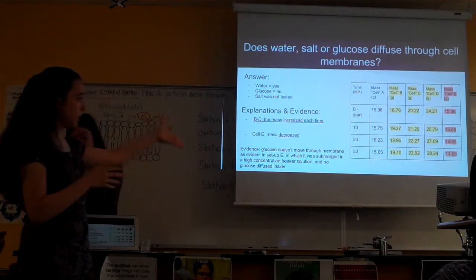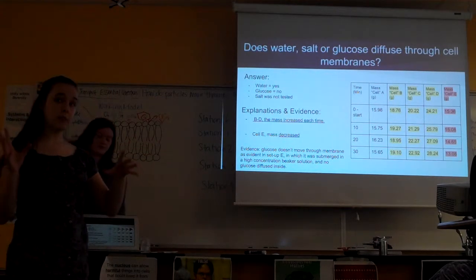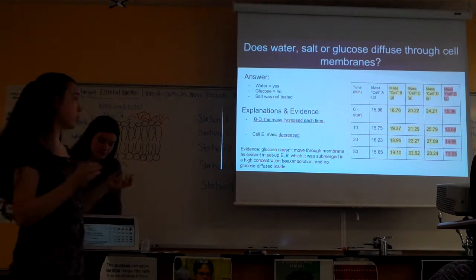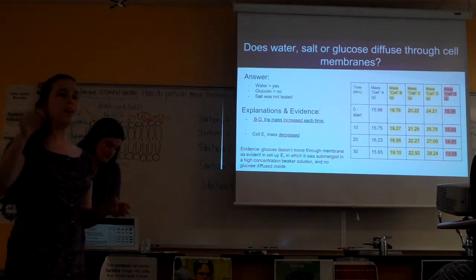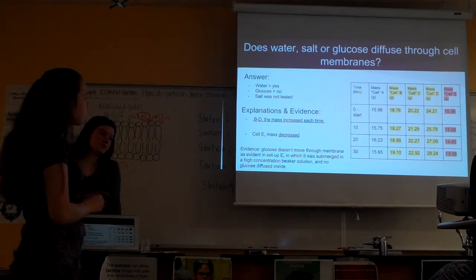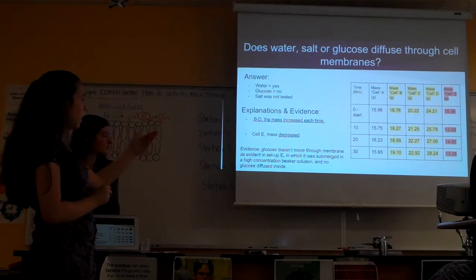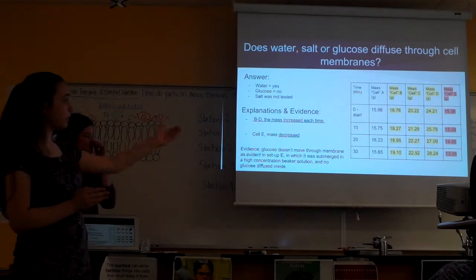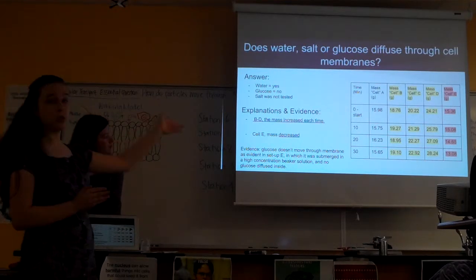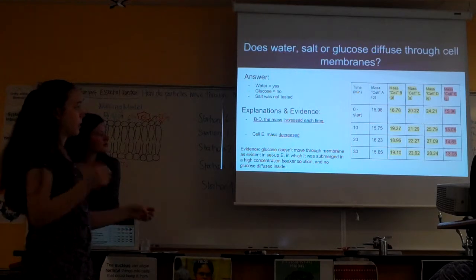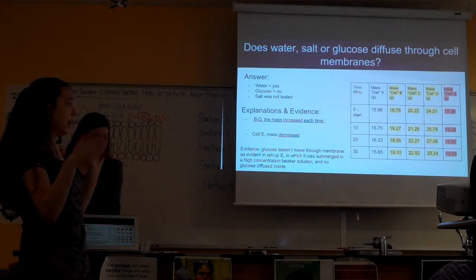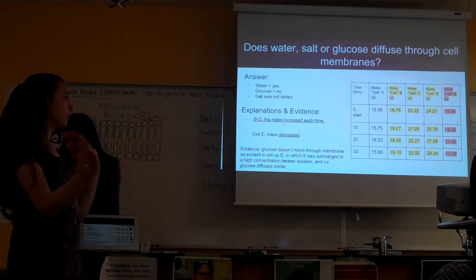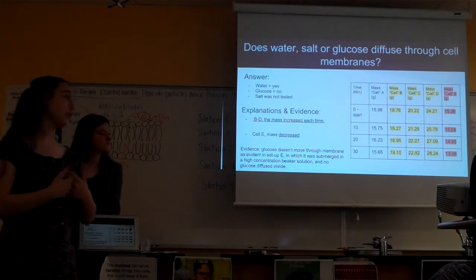Cell E, which decreased because it had the glucose solution on the outside and the water inside, proved that glucose was not moving through the cell. The concentration gradient helps to see that cell D, which increased in mass twice as much as cell C, had 80% glucose versus 50%, so there was less water in there, so water was diffusing into the lower concentration area.